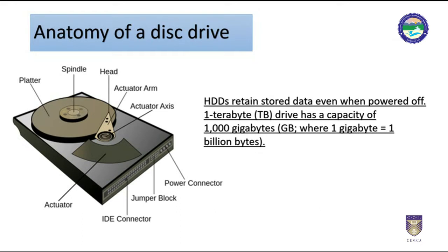Capacity is specified in units corresponding to powers of 1000. A 1TB drive has a capacity of 1000 GB, where 1 GB is 1 billion bytes. Typically, some of a hard disk drive's capacity is unavailable to the user because it is used by the file system, the computer operating system, and possibly inbuilt redundancy for error correction and recovery.